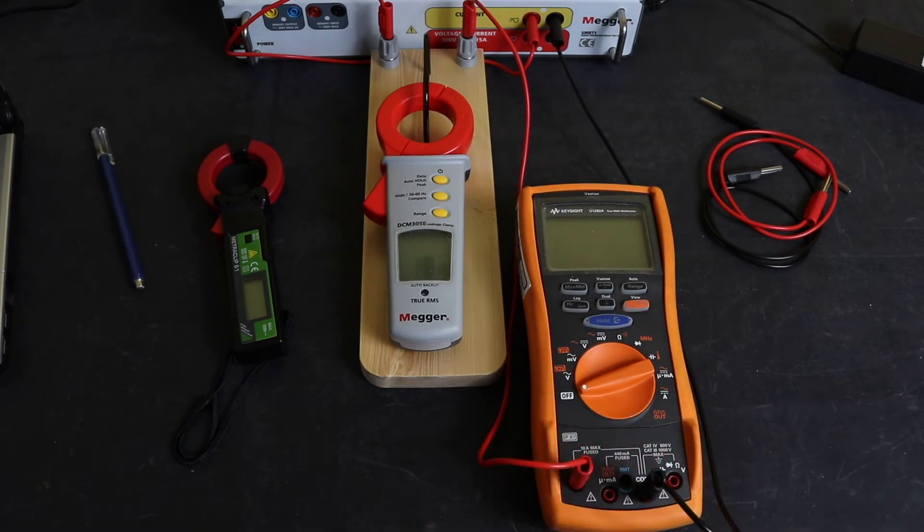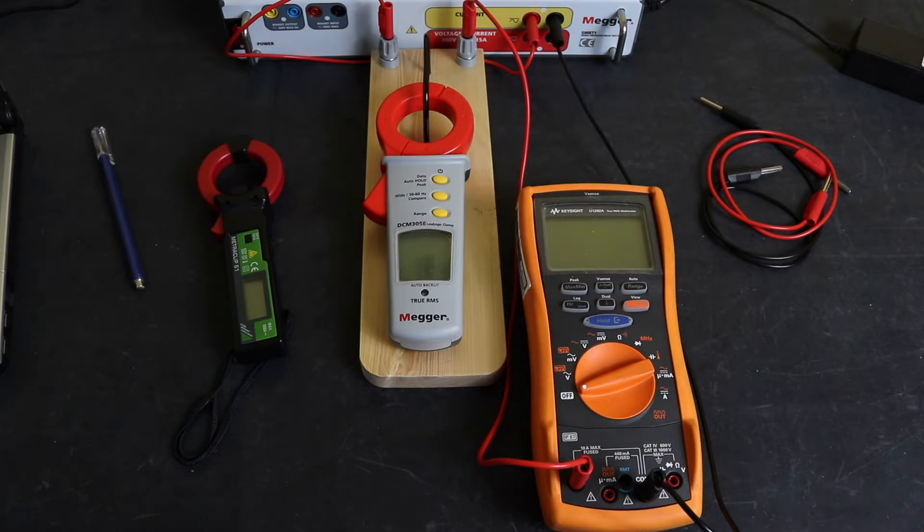Welcome back to the channel, and we are back testing our earth leakage clamps. You've seen my previous video where I tested these out. I had an accuracy issue down at the low range, 1 to 500 milliamps.